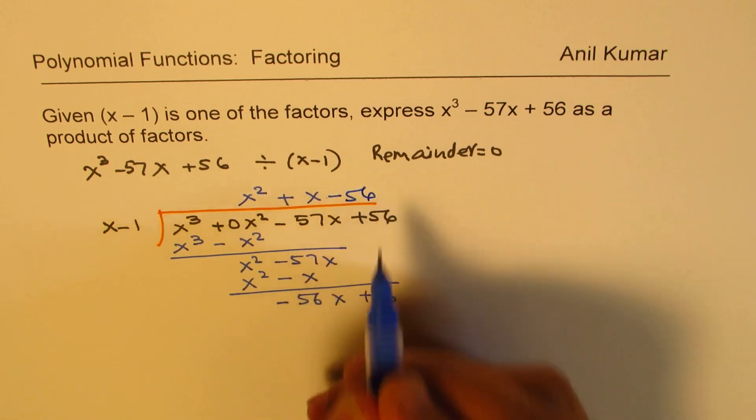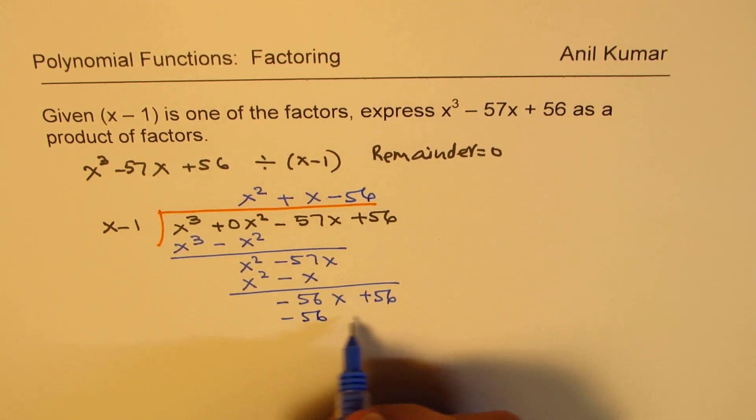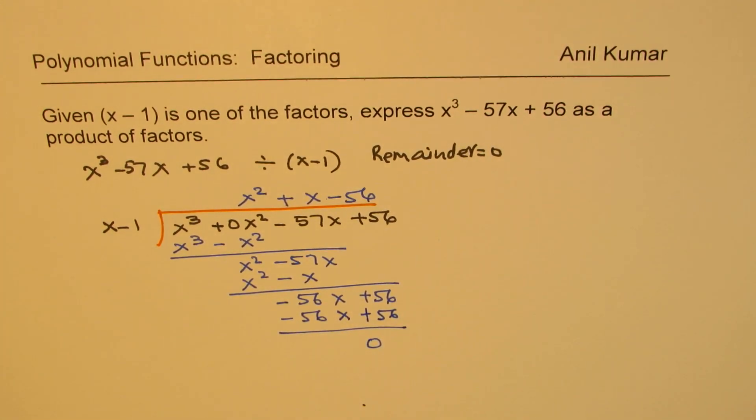Now you'll do minus 56 times. And you get minus 56x minus 56. Minus minus becomes positive. And you take away, as expected. You get 0 remainder. Perfect.